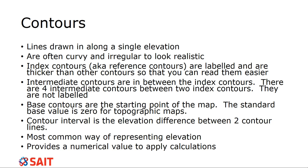There are three different kinds of contours. Index contours, also known as reference contours, are the labeled ones on a map — usually thicker than other contours so you can read them easier, or a different color. They indicate what direction is uphill or downhill. The key with index contours is that the top of the number is reading uphill.